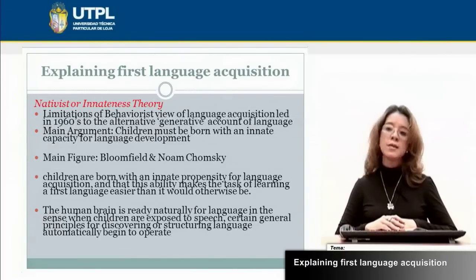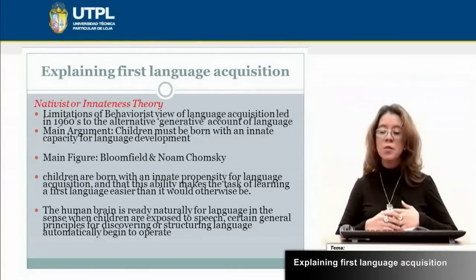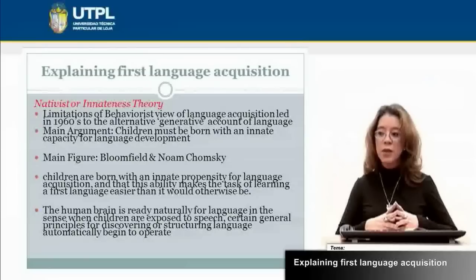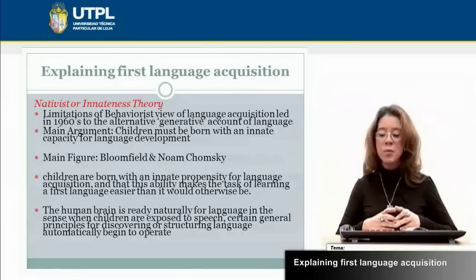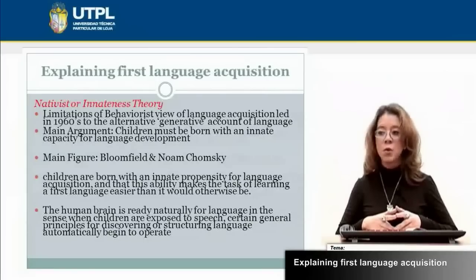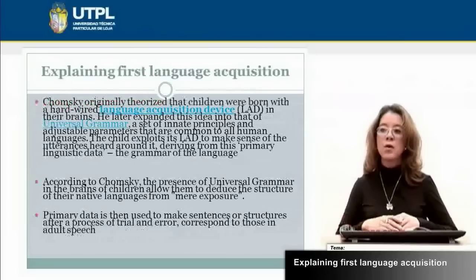We are going to continue with the second theory, which is the innateness theory proposed by Noam Chomsky. Chomsky says that children are born with an innate property for language acquisition. That means our brain is ready naturally for language — when children are exposed to speech, certain general principles for discovering and structuring language automatically begin to operate. That means we are born with an innate capacity for language development.